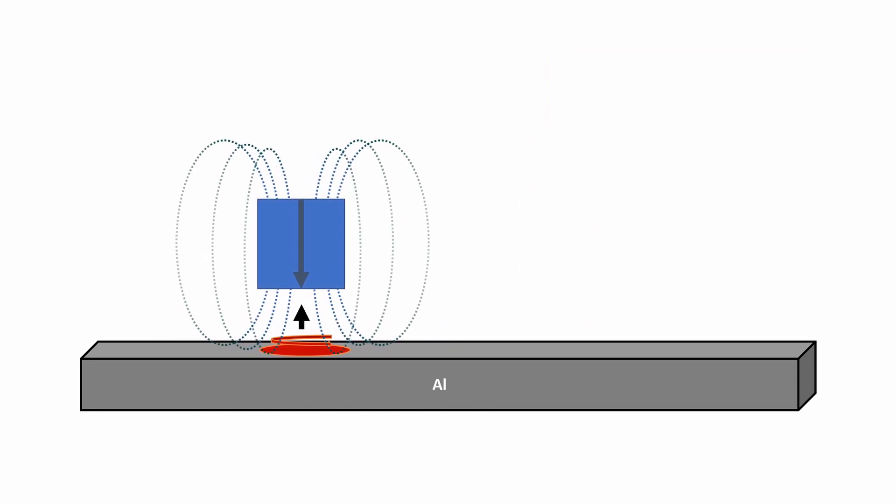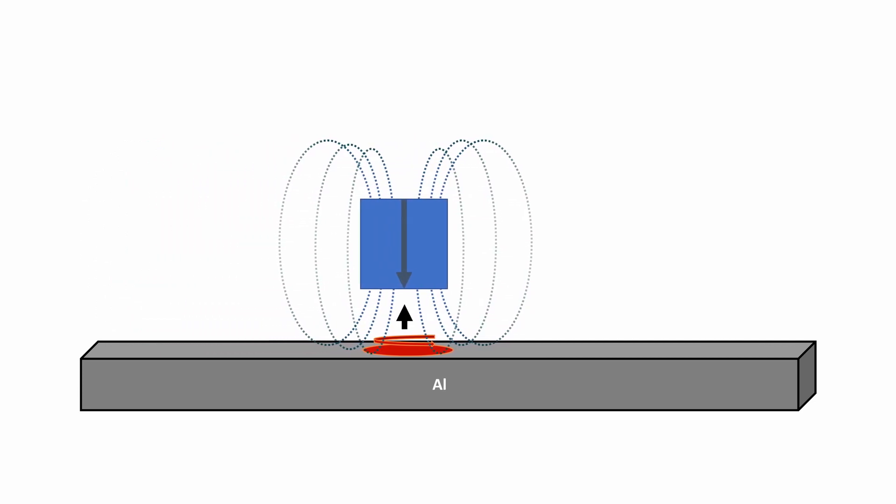The faster we move the magnetic field across the plate, the more eddy currents are induced and the larger our counter-field becomes.